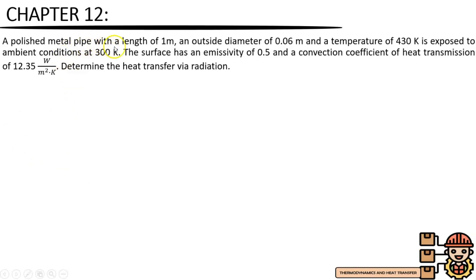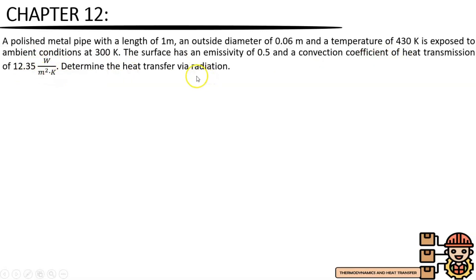A polished metal pipe with a length of 1 meter, an outside diameter of 0.06 meter, and a temperature of 430 Kelvin is exposed to ambient conditions at 300 Kelvin. The surface has an emissivity of 0.5 and a convection coefficient of heat transmission of 12.35 watts per square meter Kelvin. Determine the heat transfer via radiation.